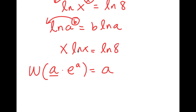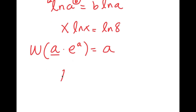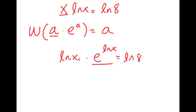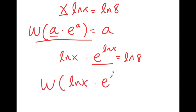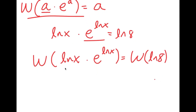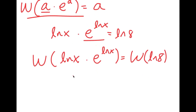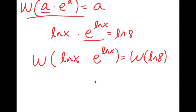So in this case, I'm going to rewrite this as ln x times e to the power of ln x is equal to ln 8, because x is the same thing as e to the power of ln x. Now I can use this formula — I'm going to take the W on both sides. So I have W of ln x times e to the power of ln x is equal to W of ln 8. This simply turns into ln x is equal to W of ln 8.